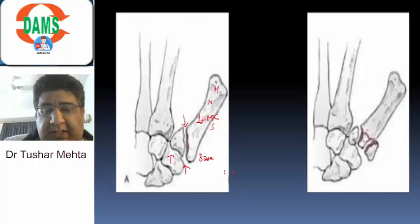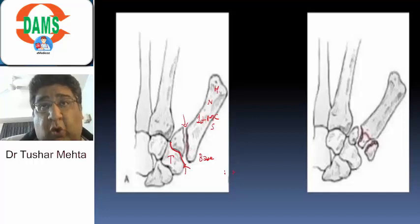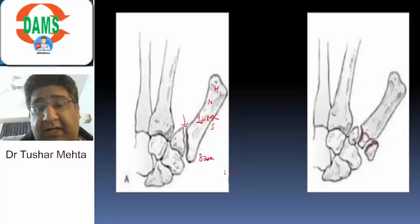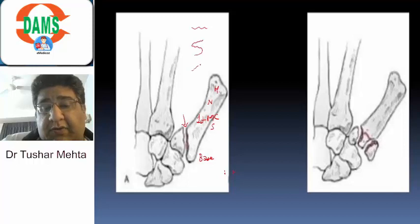This is the trapezio-first metacarpal joint line. Is the fracture extending into the joint line? Yes. Is that called an intra-articular fracture? Yes. Now, is that fracture line transverse? No. Is that fracture line spiral? No. Is this fracture line oblique? Yes.